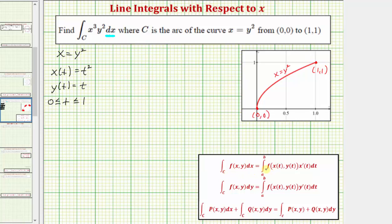Now for the next step, let's find f(x(t), y(t)). So f(x(t), y(t)) is equal to - well if f(x,y) equals x cubed y squared, x cubed in terms of t would be t squared to the third, and then y squared would just be t squared. So simplifying here, we have t to the sixth times t squared, which equals t to the eighth.